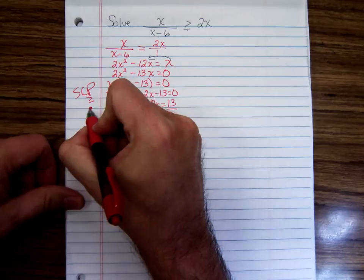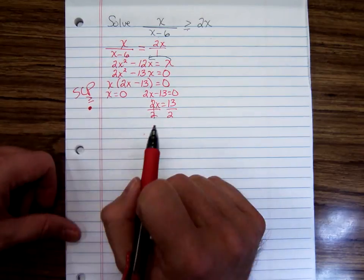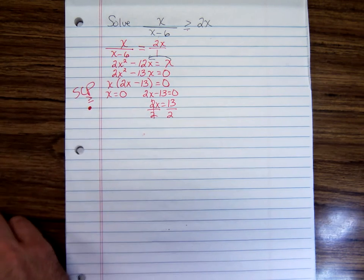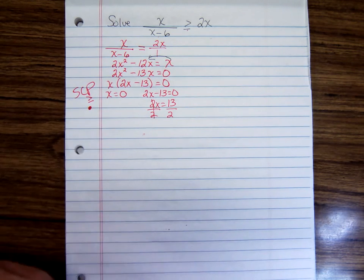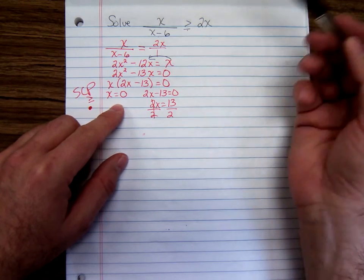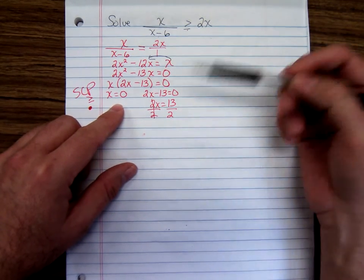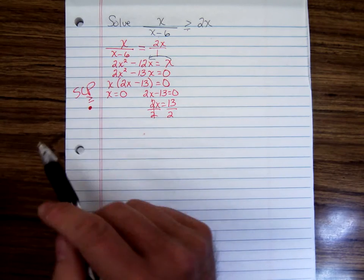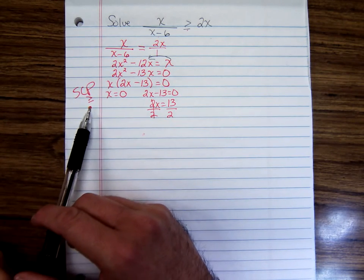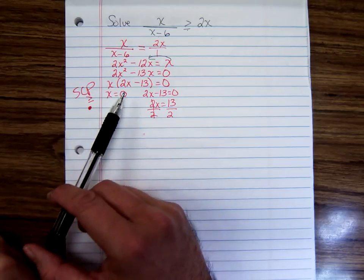You'll want to include 0 and 13 over 2 as solutions because, well, take the 0 for instance. If you put a 0 in, we'd have 0 over negative 6, which is 0. 2 times 0 is 0. So 0 greater than or equal to 0 is a true statement. So you would want to include that number as a solution.